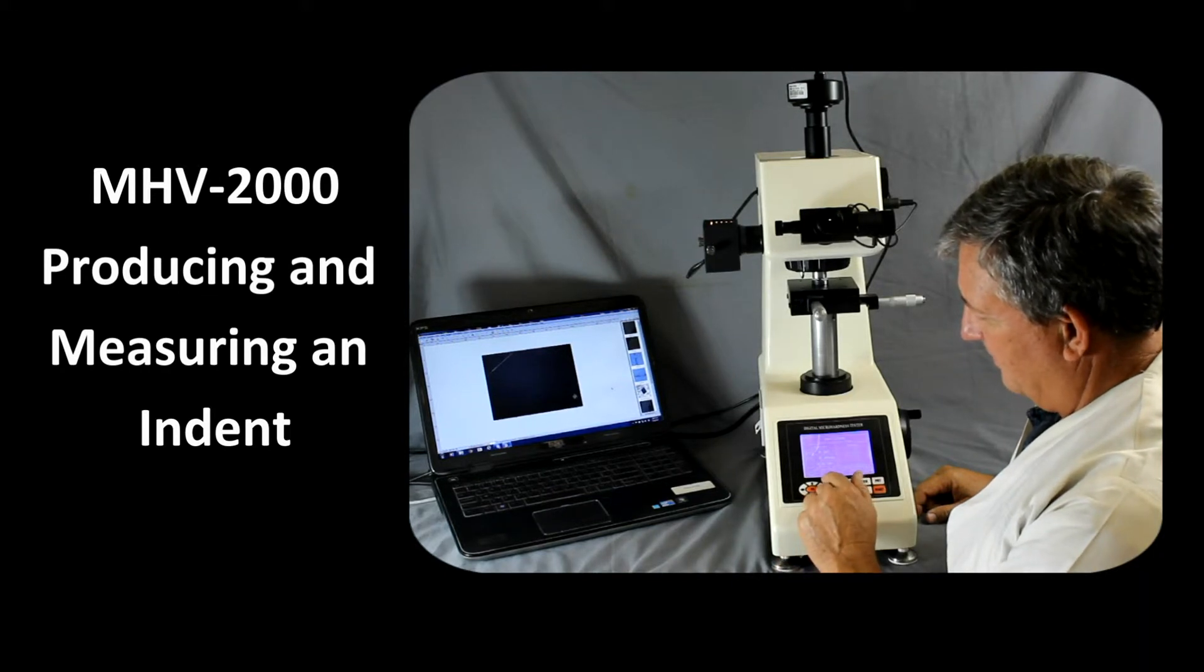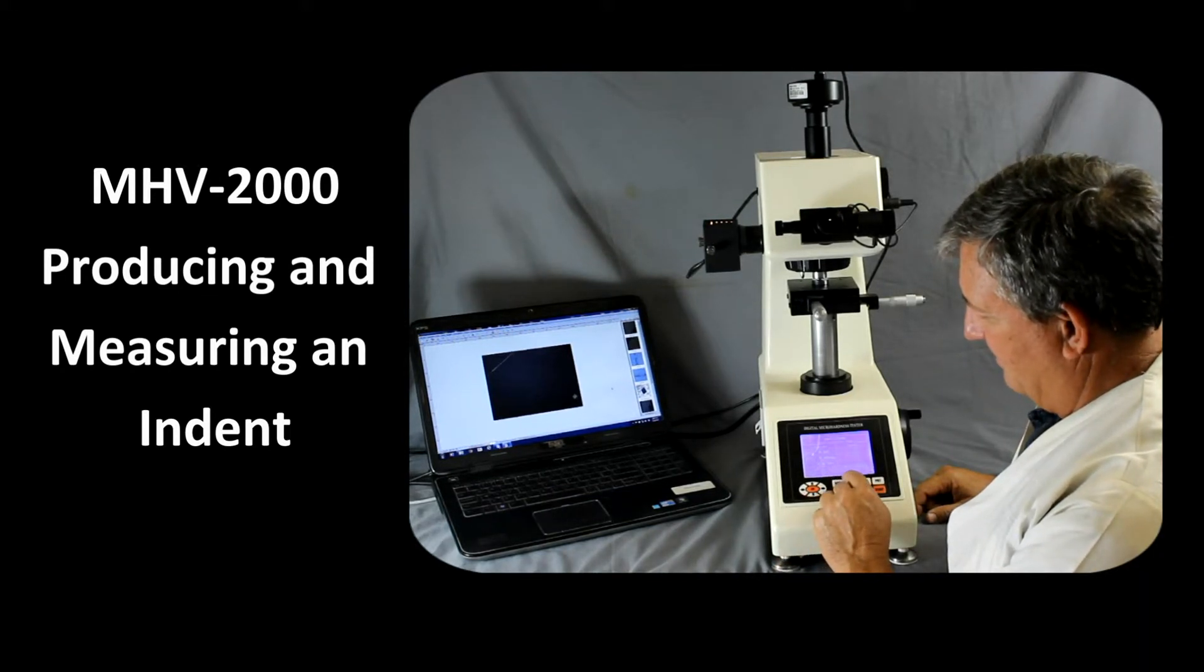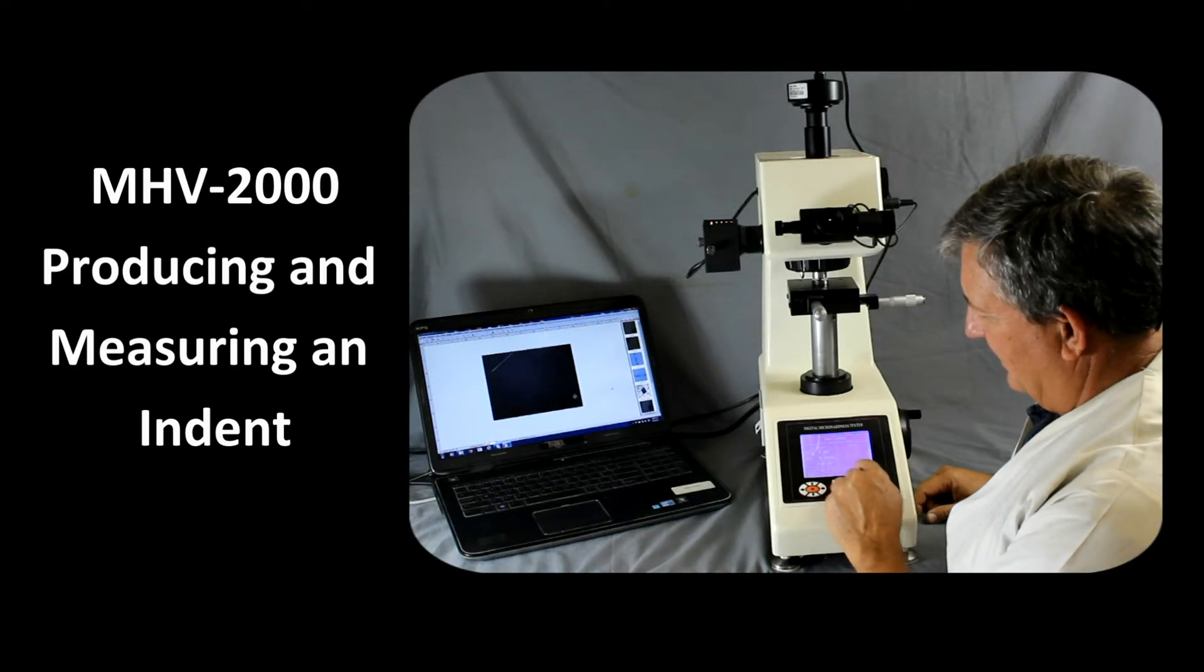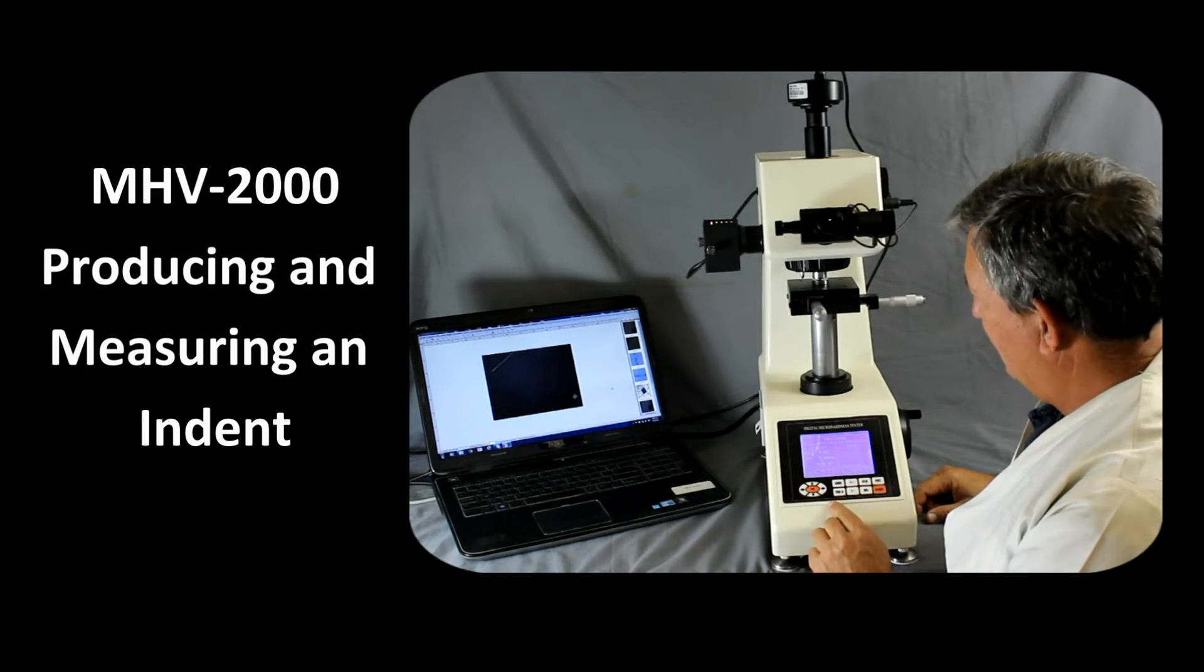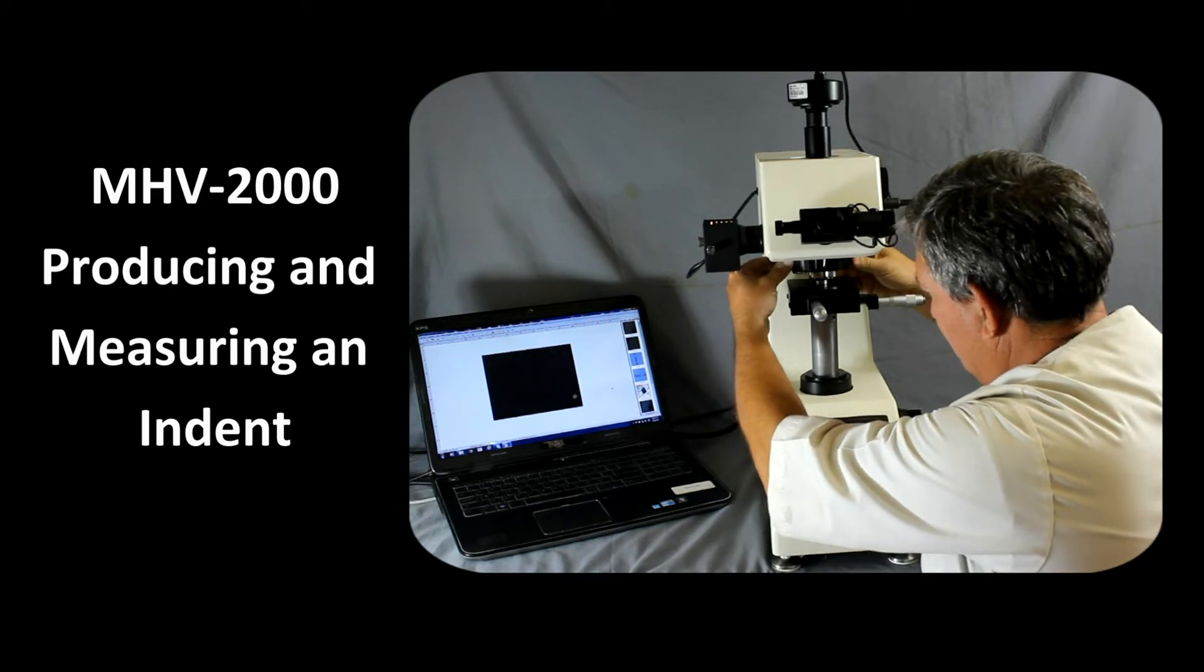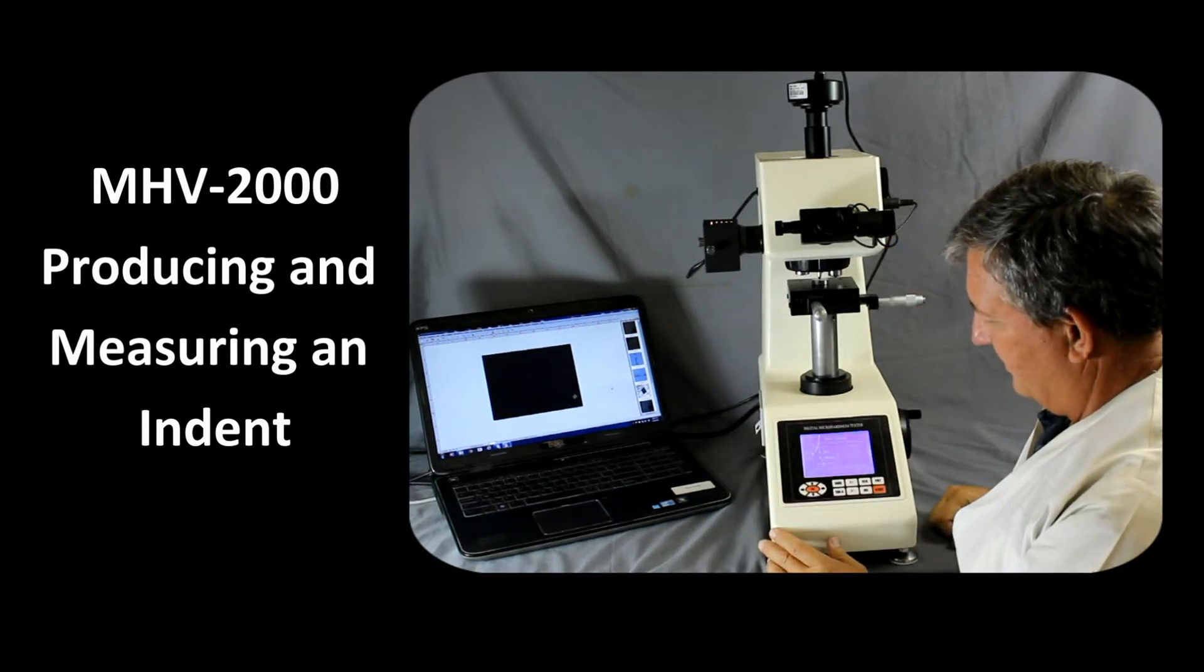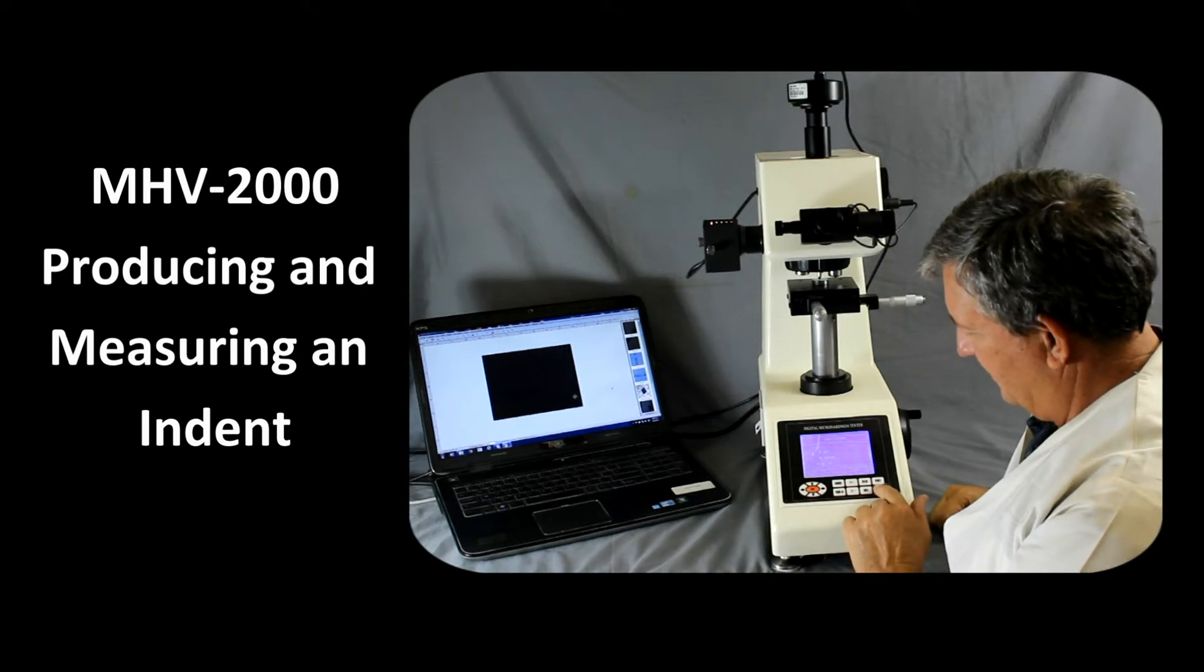So we have our scale chosen. We have our dwell time, our light intensity, conversion scale, and other parameters already loaded. At this point, let's go ahead and rotate over to the indenter. And we're all set to start our measurement. So let's press the start button.